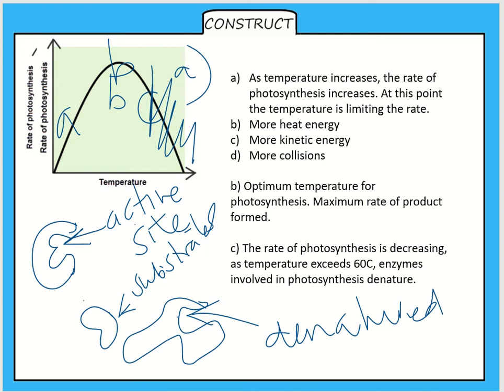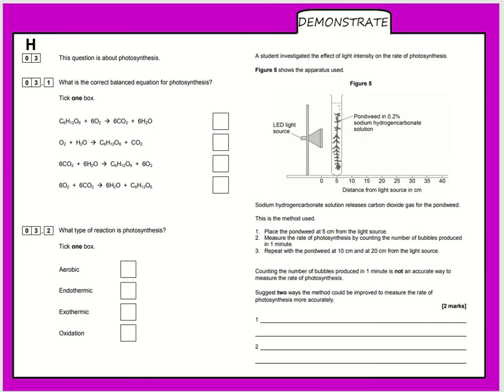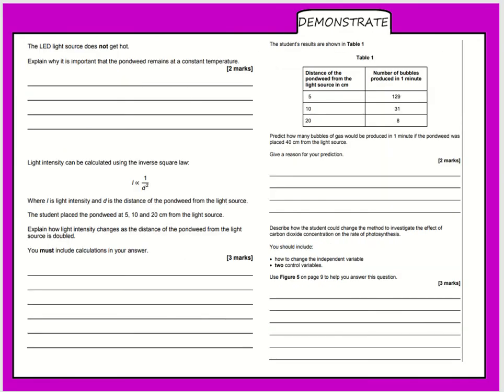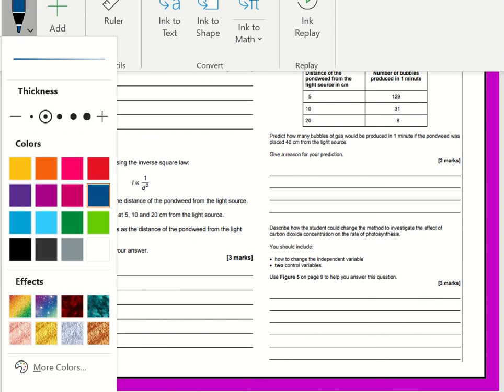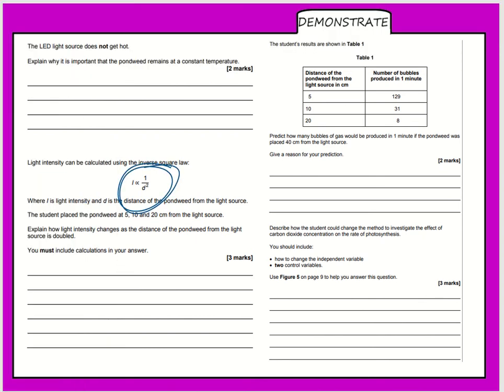You can then go on and do this question, which is in your notebook and this question. Now this question's got a little bit here about the inverse square law. You're going to need an explanation of that. It depends on what group you're in, you'll have a different question in your notebook. If you think you're likely to be doing the higher tier, then you need to continue watching the video. If not, you can stop it and get on with the work.